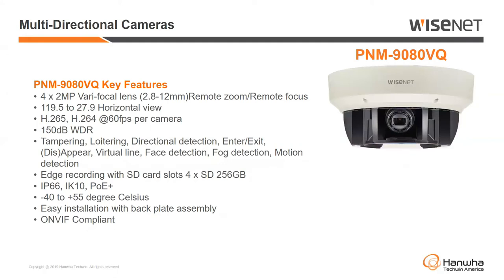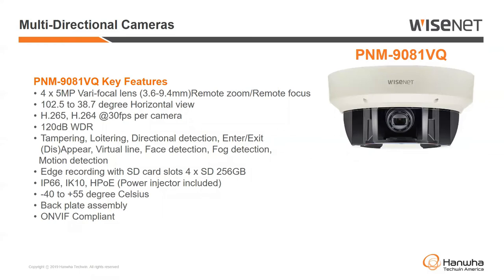In terms of the different models, we have the PNM-9080VQ. This is the big one that does everything — it has four 2-megapixel heads with motorized varifocal zoom lenses, so you can remotely adjust the zoom and remotely refocus the head. You don't have to buy extra lenses. You install the camera, adjust the angle and rotation by hand, then remotely adjust the zoom and focus over the network. True wide dynamic range, analytics, outdoor vandal-rated, ONVIF compliant. Then we have the upgraded model with 5-megapixel camera heads — besides that, fairly identical, but very flexible and easy to work with.